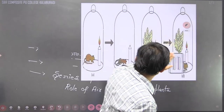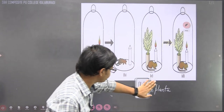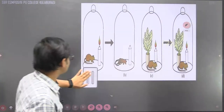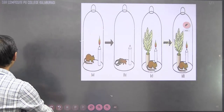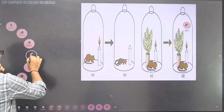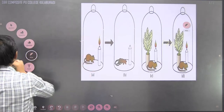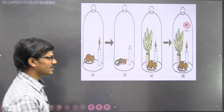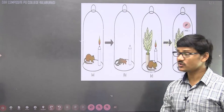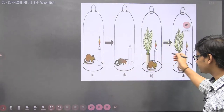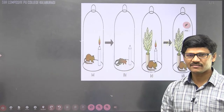Looking at the image of the experiment conducted by Joseph Priestley, you can see why it is called the Bell Jar experiment — the shape of the glass vessel resembles a bell jar. He conducted this experiment not in a single step but as a series of events.